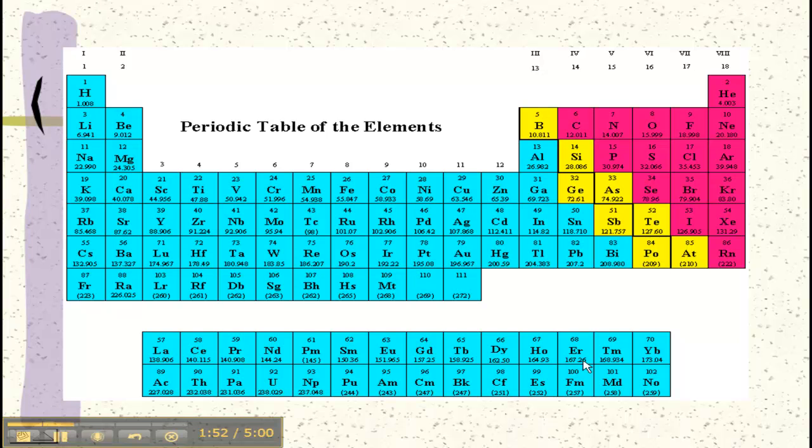You guys have already color-coded. You know that all the metals are over here to the left of what we call the stair-step line. Along the stair-step line are our metalloids and over here in the upper right are our non-metals.